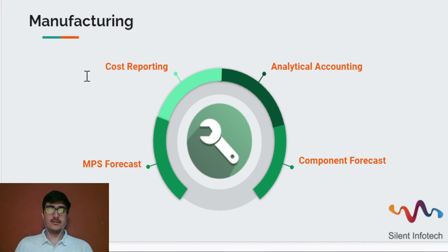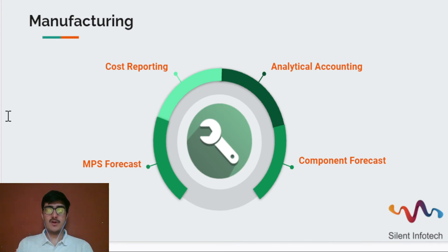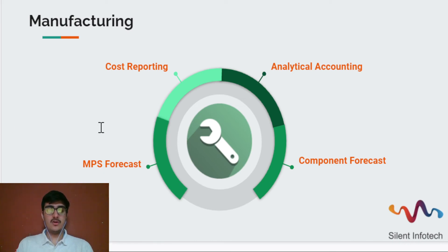The next module is manufacturing. You can now get analytics on manufacturing orders and also track costs. You can get a forecast on expected manufacturing orders and the components for the same. For MPS forecasting, you can get forecasting for the demand of orders from past years, including the past 30 years.